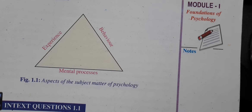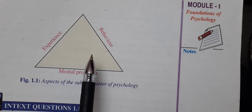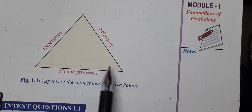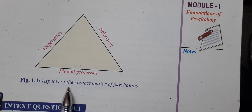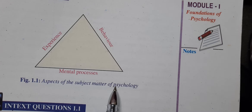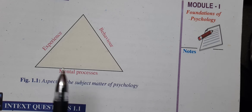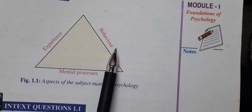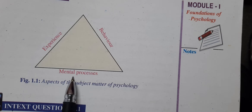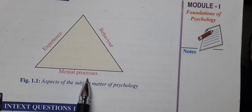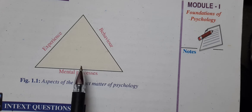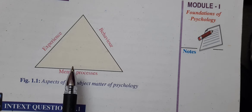There is a triangle representing the aspects of the subject matter of psychology: experience, behavior, and mental processes — these are three important parts of any person's mind.